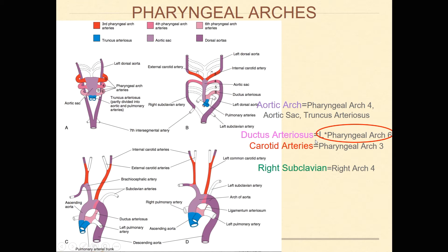The last piece is going to be your right subclavian. Your right subclavian is a portion of your right arch four, shown here in light pink, and then it continues out as the rest of the vessel.